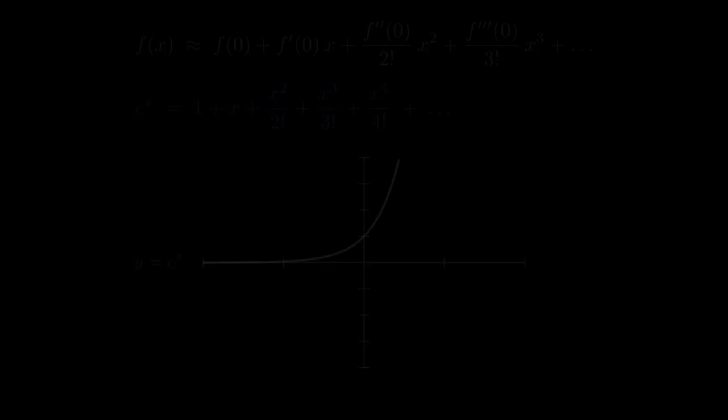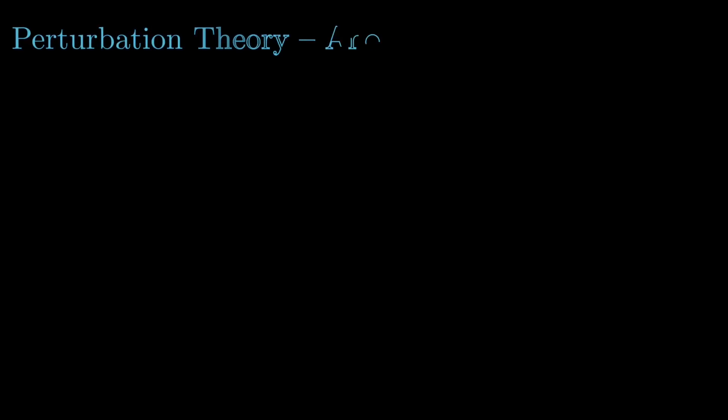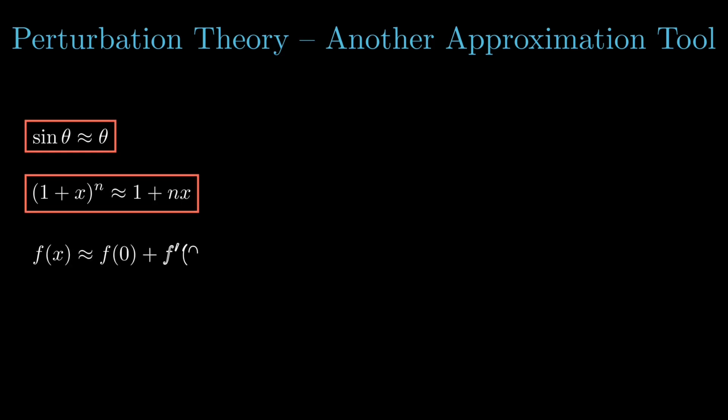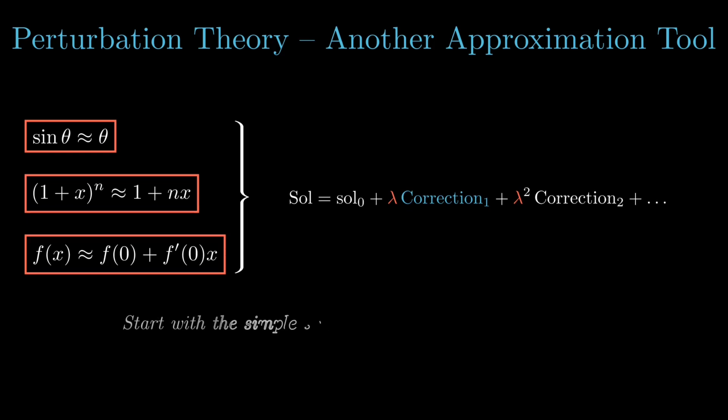So far, we saw how small angle, binomial and Taylor approximations simplify physics and this idea evolves into a powerful framework in advanced topics, namely perturbation theory. The core philosophy of perturbation is this: start with a problem you can already solve exactly and then add small correction terms to account for the effects that you initially ignored.